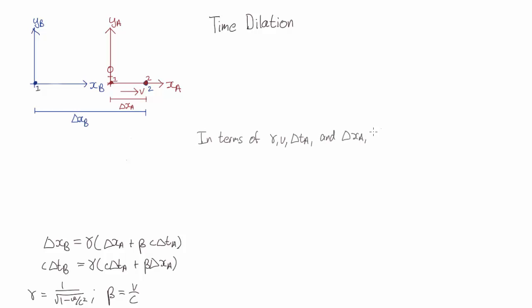So in Bob's frame, in terms of gamma v, delta ta, and delta xa, what will Bob measure as the time between Alice kicking the ball and the ball landing?